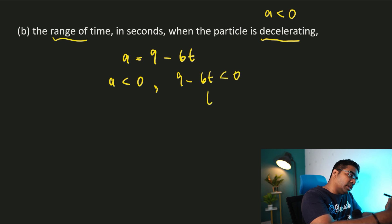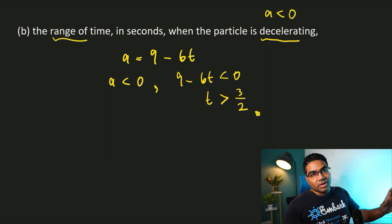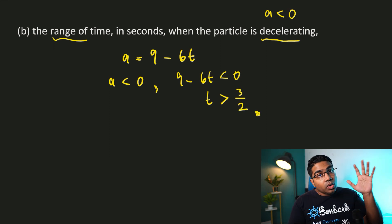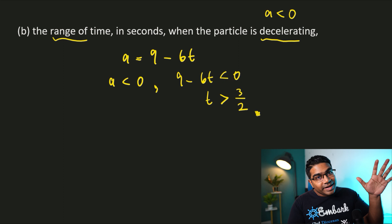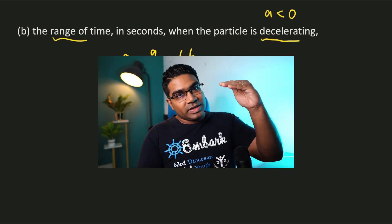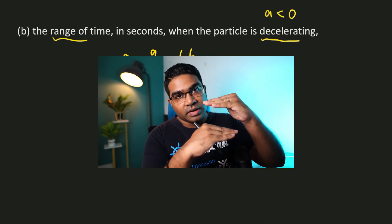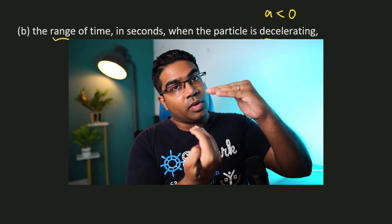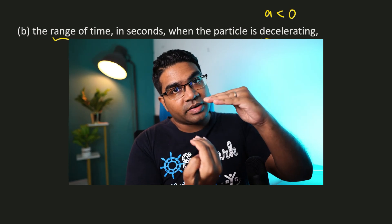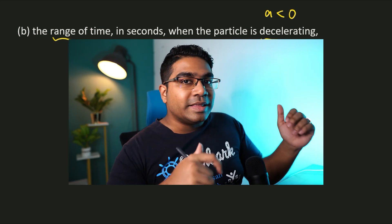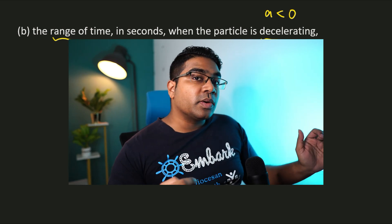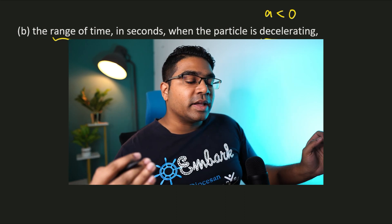Therefore t is greater than 3/2. However, this is not the end of the story. The particle is only decelerating if its acceleration and its velocity are in opposite directions. If they are both in the same direction, whether positive or negative, then the object will actually be accelerating.